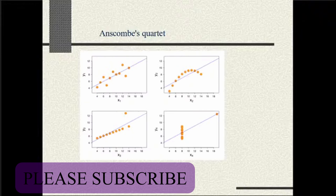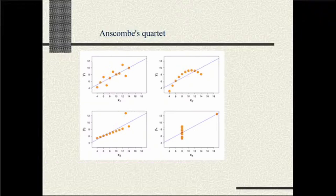The point here is that you cannot simply find out the relationship between variables just by looking at the correlation statistics or correlation coefficients. You also have to do the visualization of the data. The whole point of his argument is that you have to do a visual inspection of the data and the relationship, and that should supplement your correlation coefficient.